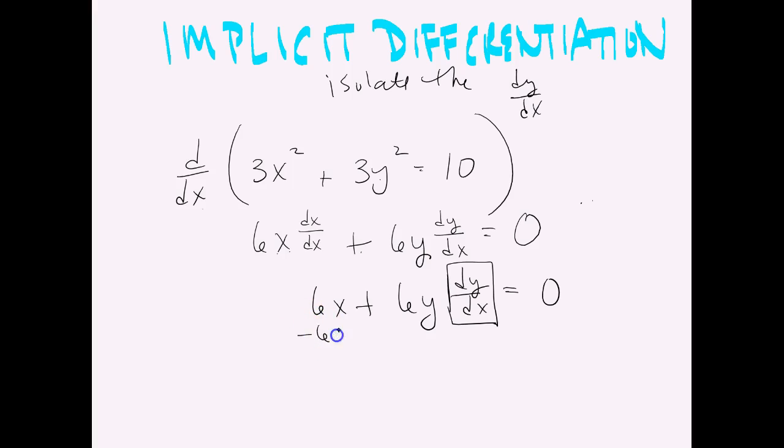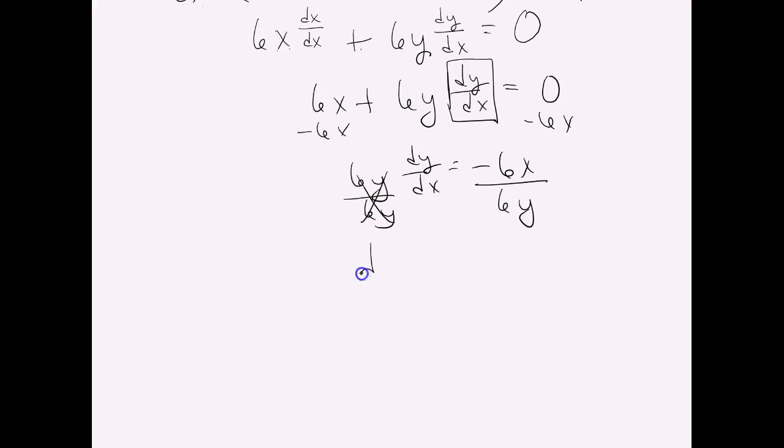So I'm going to start by subtracting 6x from both sides. Then I'm going to divide off the 6y from both sides. And then my final answer is, what does that look like? Negative x over y. That would be my derivative using implicit differentiation. So now you have a way when x's and y's are mixed to actually take a derivative.